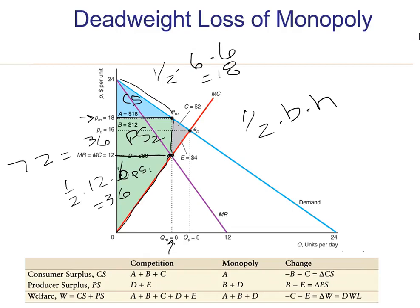Now, where is the deadweight loss? Well, if you had a competitive firm, they would produce where MR, MR and demand is the same, where that demand hits the MC curve right here. So a competitive industry would produce two units more. They'd produce 8. What would the price be? Well, where this MC hits the demand curve, the price would be 16.